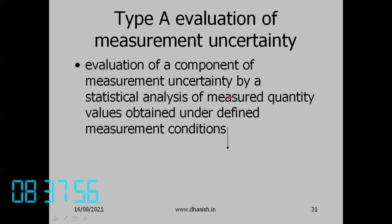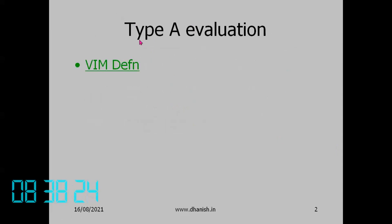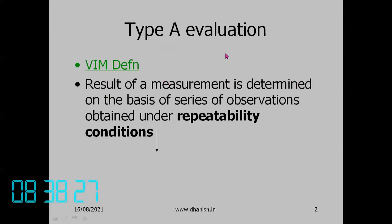We need a large number of measured quantity values, and they should be obtained under similar conditions. You cannot take a few values under one condition and a few under another and call it a Type A evaluation. Under similar conditions, you take a number of readings, do a statistical analysis, and evaluate the uncertainty — that is called a Type A evaluation of measurement uncertainty.